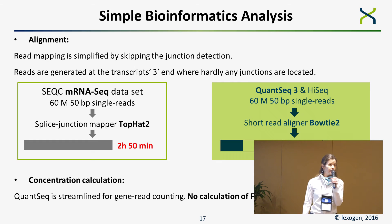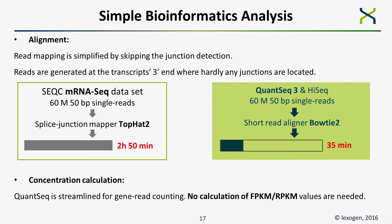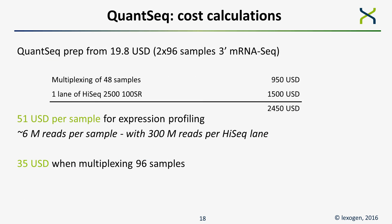With QUANseq, bioinformatic analysis is also simpler because read mapping is simplified by skipping junction detection, so you can use faster aligners. Concentration calculation is much more straightforward because you don't need FPKM or RPKM length normalization.